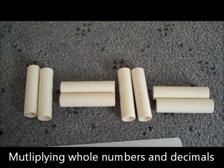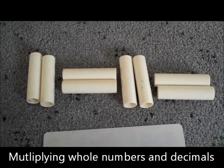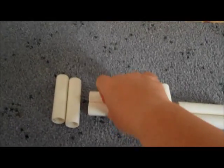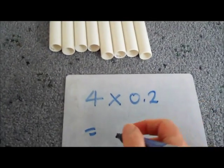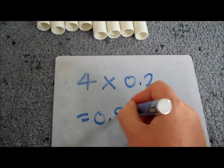Here I've got four lots of two tenths or four lots of zero point two. So four lots of zero point two you can see is just point eight. So four lots of zero point two is zero point eight.